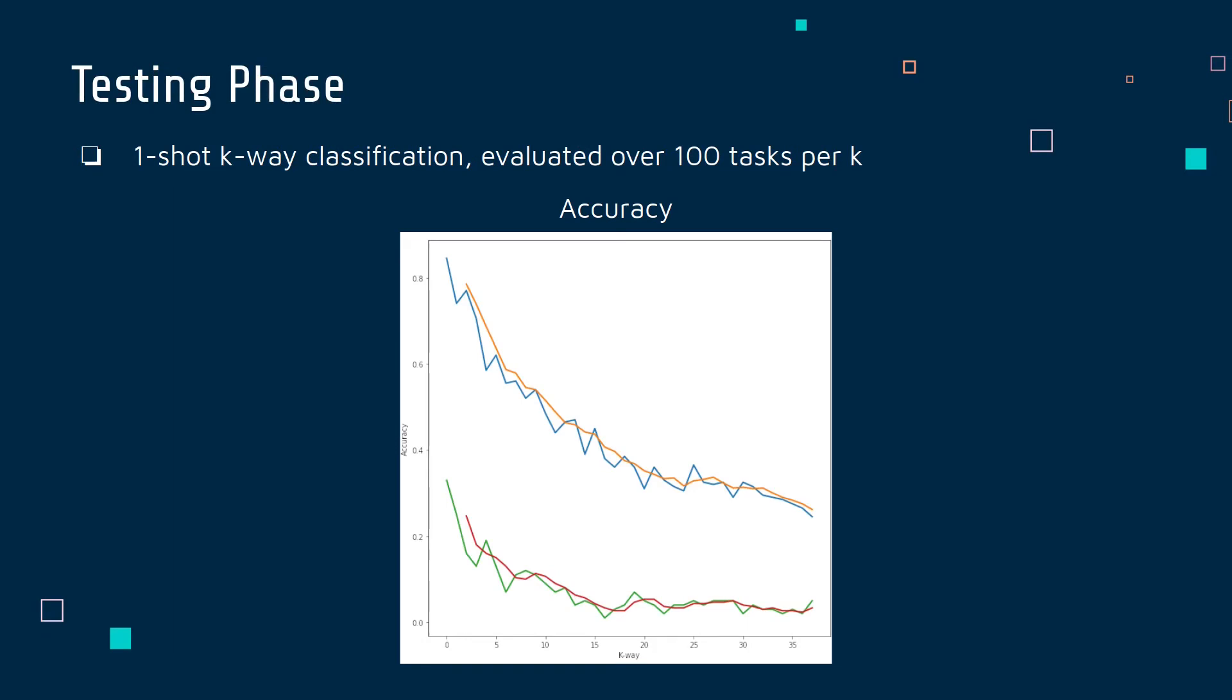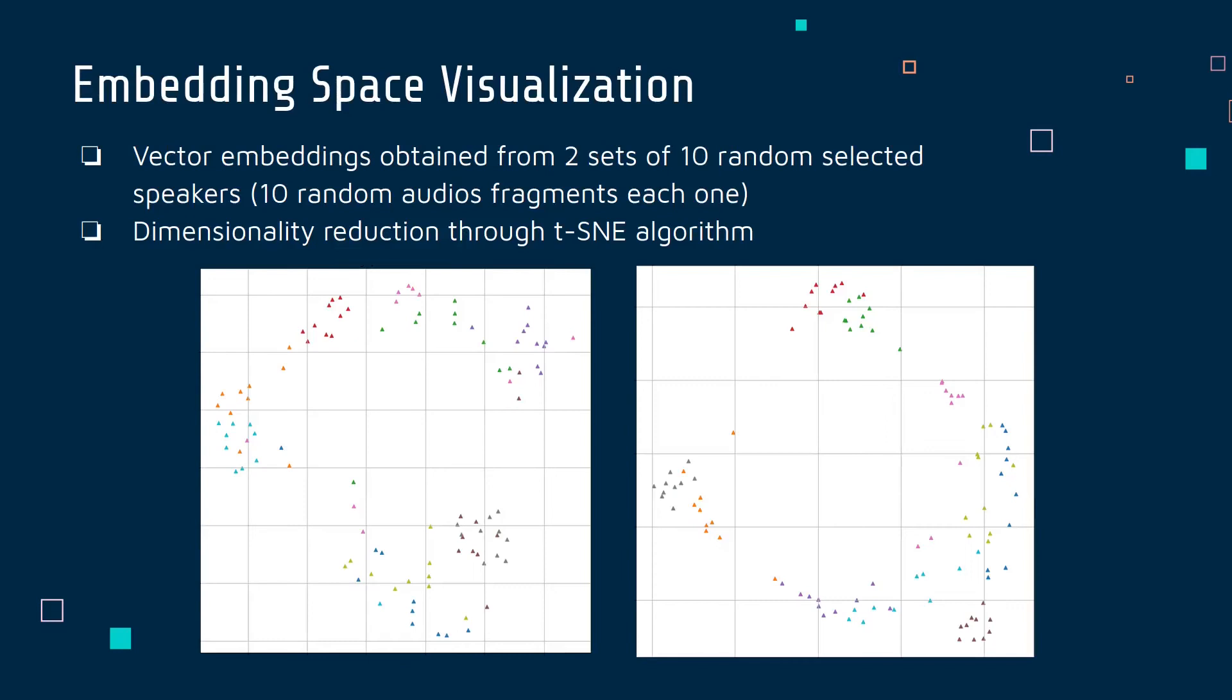In the testing phase, we track the evolution of the model's performance as we increase k. That is, the number of samples in the support set. As expected, as k increases, the accuracy of the model suffers greatly, since all the classes that are being introduced to the model have not been seen during the training phase.